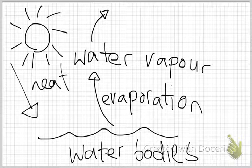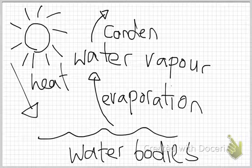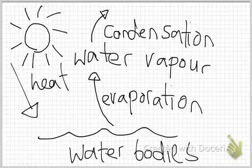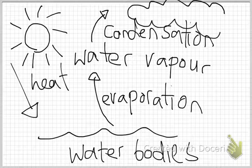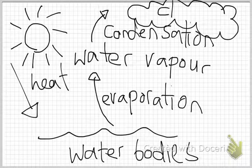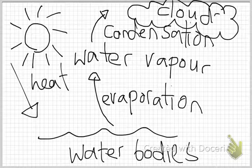Water vapor rises up to the sky. We know that higher up in the atmosphere it is colder, so when water vapor comes into contact with the colder surroundings, the next process that will occur is condensation — C-O-N-D-E-N-S-A-T-I-O-N. During condensation, water vapor turns into clouds. Clouds are equal to water droplets, and of course then it becomes rain.